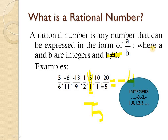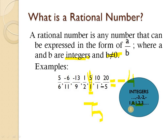A quick review: integers are numbers like ..., -3, -2, -1, 0, 1, 2, 3 — positive natural numbers, negative natural numbers, and 0. Zero is also an integer. All of these together comprise the set of integers.